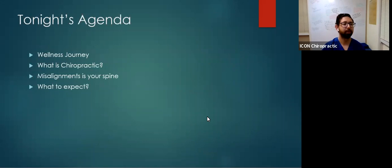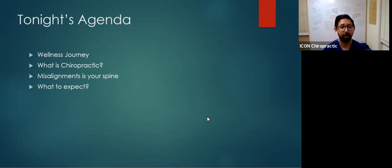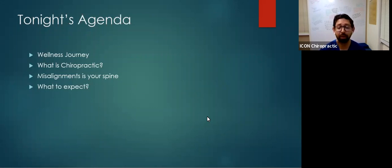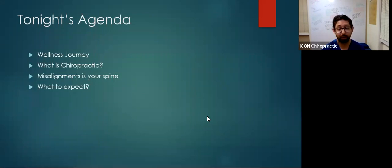For tonight's agenda we're going to cover four main things. First, we're going to talk about the wellness journey — what every patient goes through during the healing process to get out of pain. Next, we're going to talk about what chiropractic is, how it's defined, and what we're looking for. Then we're going to talk about misalignments in your spine and what that can lead to. Finally, we're going to talk about what to expect while you're under care.